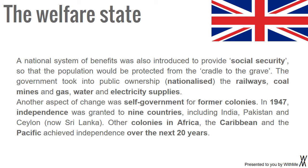The government took into public ownership — nationalised — the railways, coal mines, and gas, water and electricity supplies. Another aspect of change was self-government for former colonies. In 1947, independence was granted to nine countries, including India, Pakistan, and Ceylon, now Sri Lanka. Other colonies in Africa, the Caribbean and the Pacific achieved independence over the next 20 years.